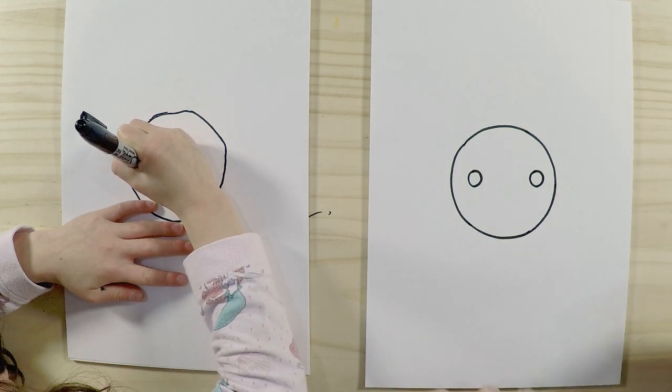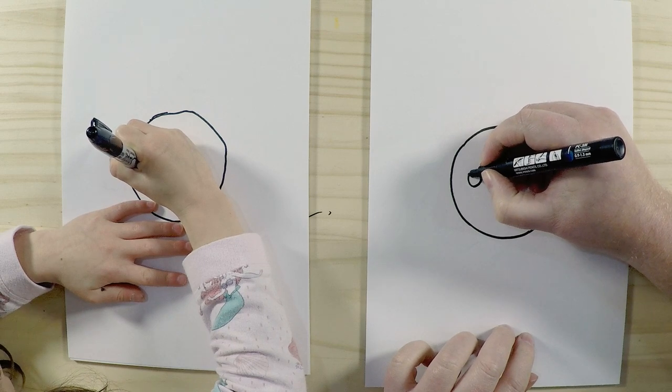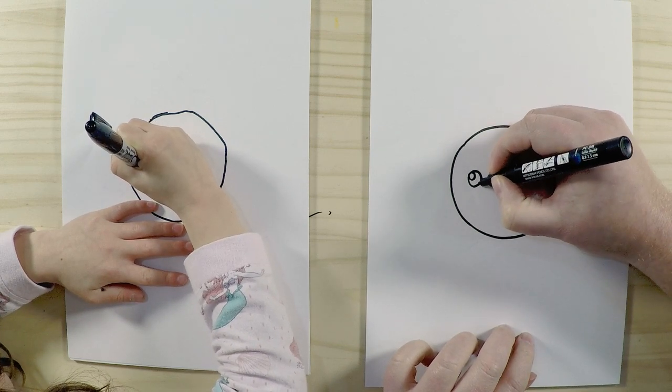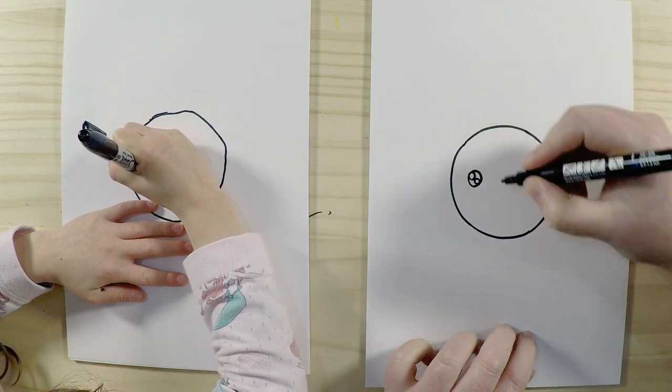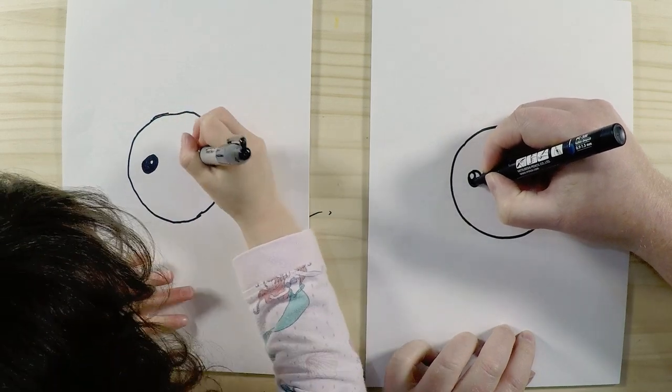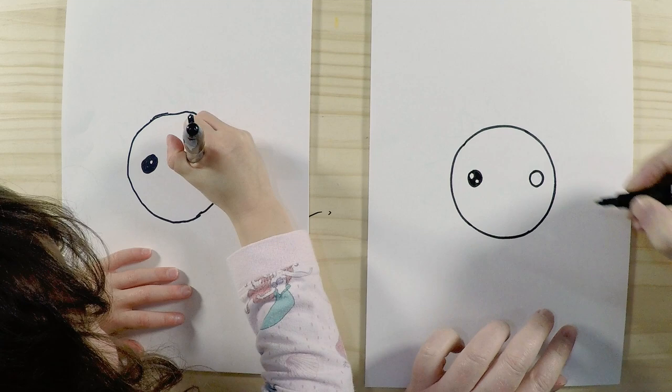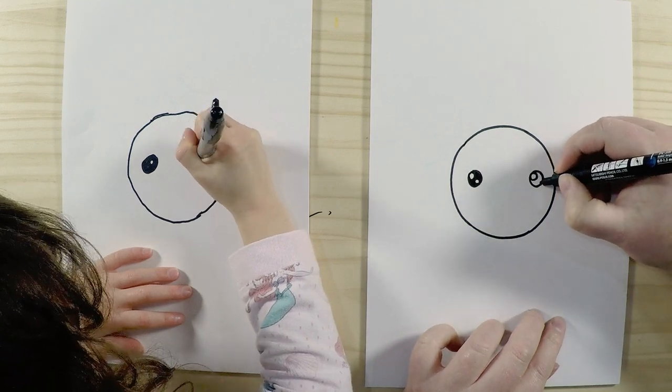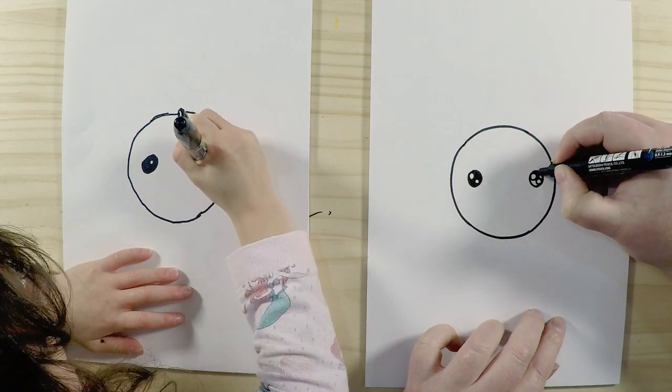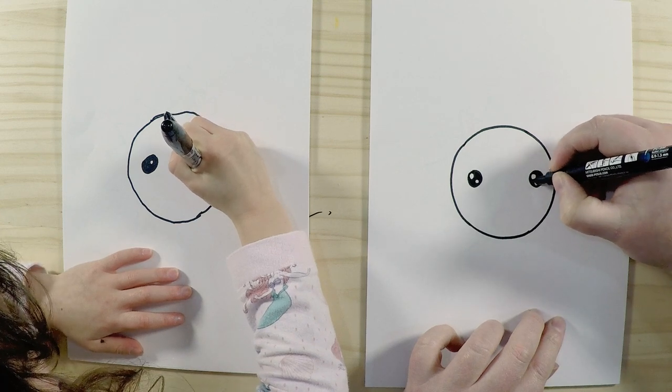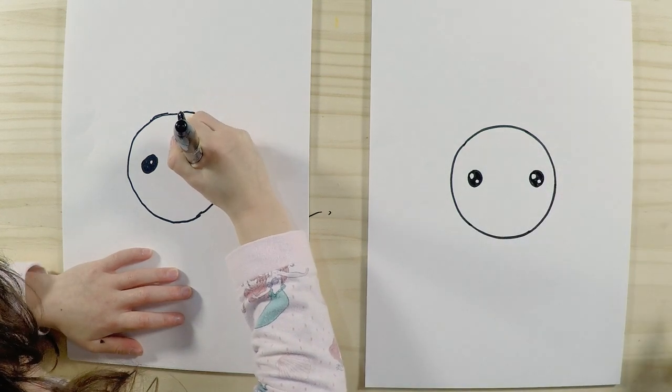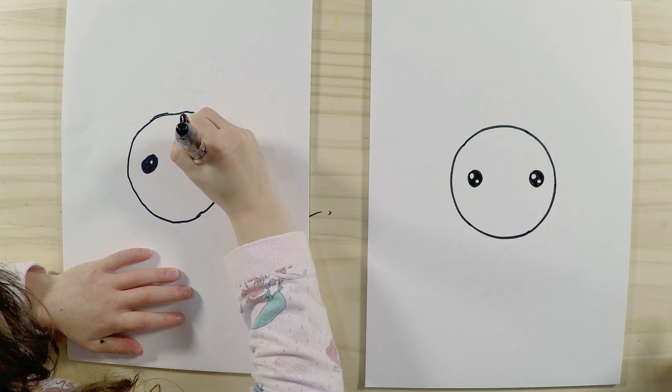And what I like to do is draw another two circles in there, and then color it in. It looks like it's got some reflection on the eye, and that just makes it a little bit cuter. All right, how are you going with yours? Oh, it's looking really good and cute!